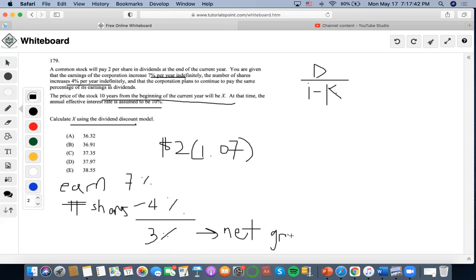So now, net growth. So now that means that based on the net growth of 3%, we then want to just calculate the growth of the $2 common stock dividend from there. So we'll multiply it by 1.03.